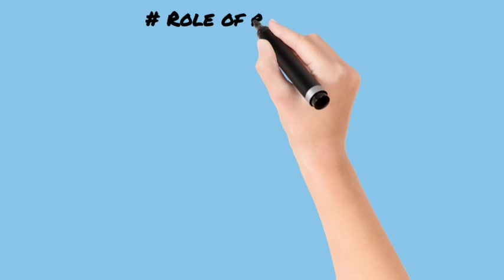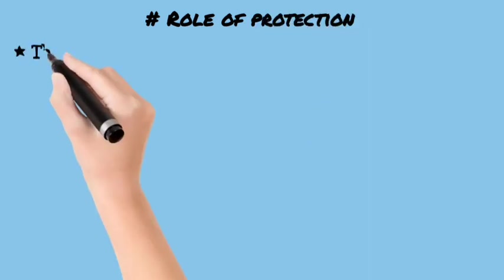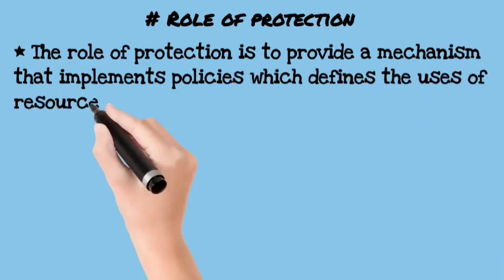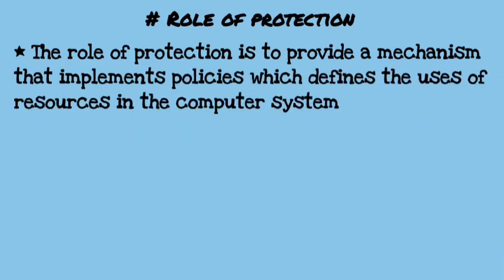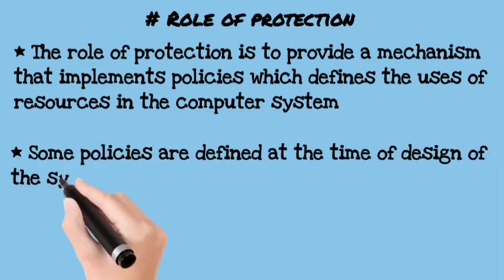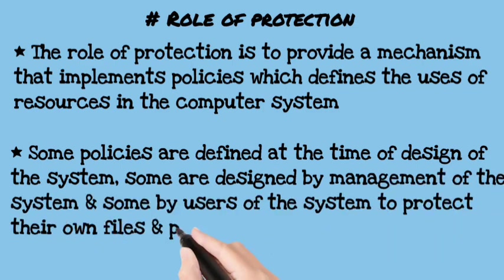Second, we improve our system. The role of protection — what is the role of the system according to system resources? Now there are some policies and some management of the system, and some users define their own policies so that they can protect their programs and their files.